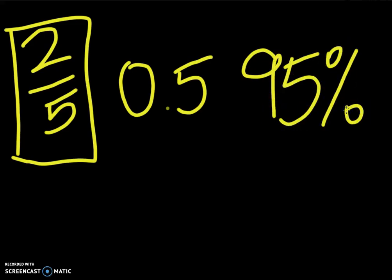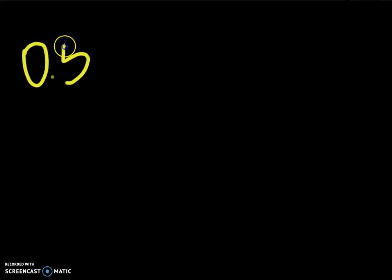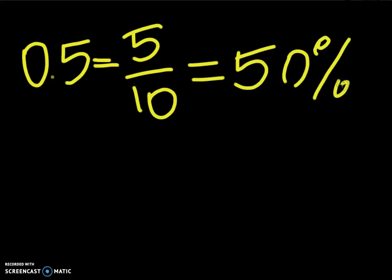These are three different forms of representing data, and we can easily interchange between them. So the decimal 0.5 also equals 5 over 10, and it's also 50%. You want to see how this happens? To convert from the decimal to a fraction — since there's only one decimal place, it's 5 over 10.